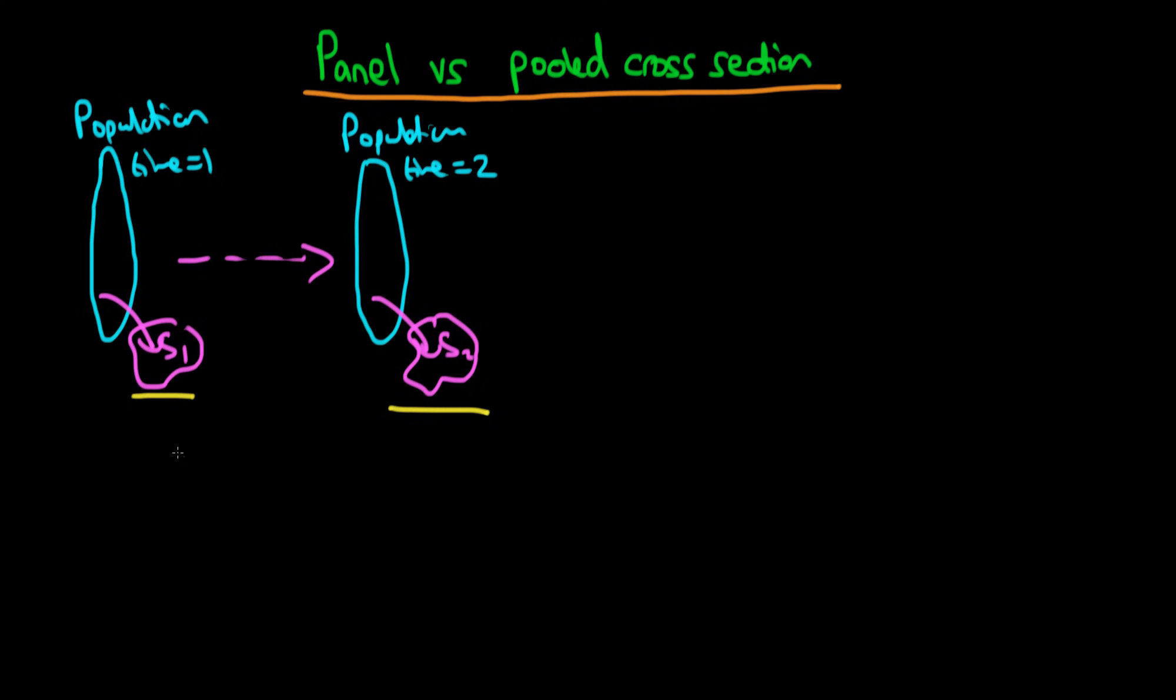So the idea with pooled cross-sectional models is that we lump both of these two samples of data together because there's no reason to suggest that they aren't independent of one another and then we just estimate OLS as we always have done. Okay so that's pooled OLS which is the thing we've already introduced.